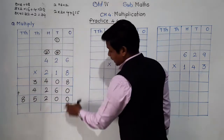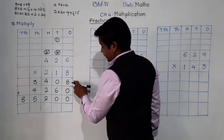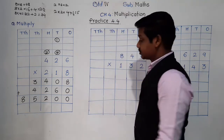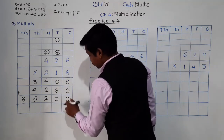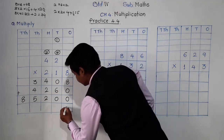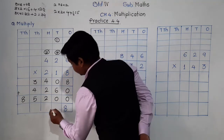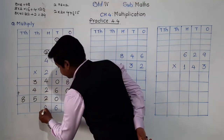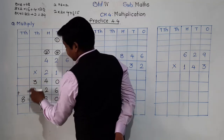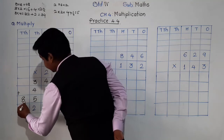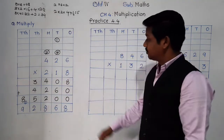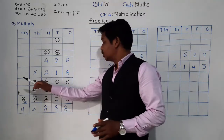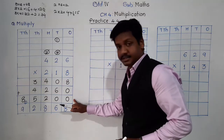Now we find the final answer by adding these three products. The first is the product when multiplying by the ones place digit, the second by the tens place digit, and the third by the hundreds place digit. Adding: 8 plus 0 plus 0 is 8; 0 plus 6 plus 0 is 6; 4 plus 2 is 6; 4 plus 3 is 7 and 5; 12, so 2 comes down and 1 carry; 8 plus 1 is 9. The final answer is 92,860.